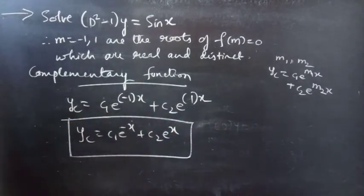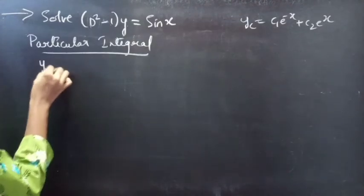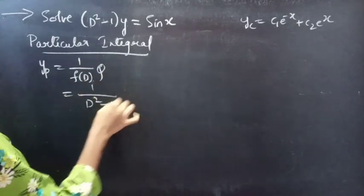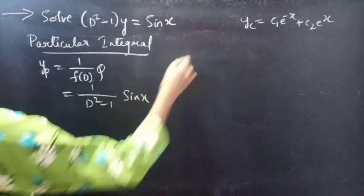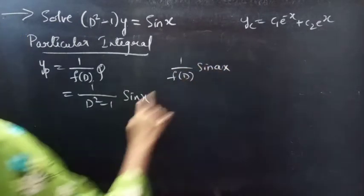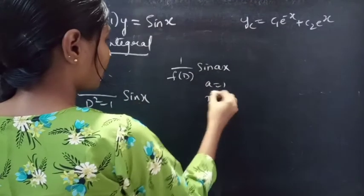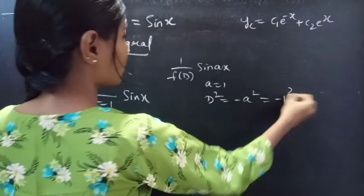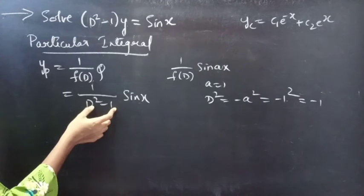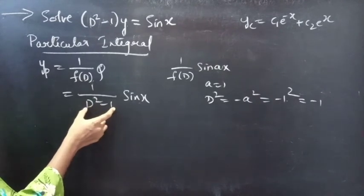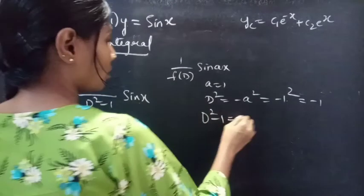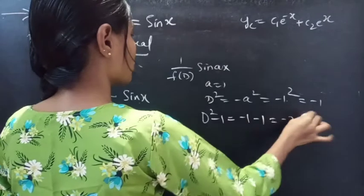Now let's find yp. We find the particular integral using 1/f(D) · Q, which is 1/(D² - 1) · sin x. This is of the 1/f(D) · sin(ax) form for a = 1. We replace D² by -a² = -(1)² = -1. Checking the denominator: -1 - 1 = -2, which is not equal to 0, so we can proceed.